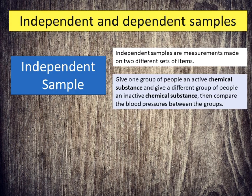For example, give one group of people an active chemical substance and give a different group of people an inactive chemical substance, then compare the blood pressures between the groups.